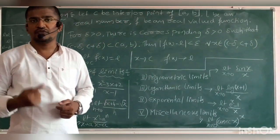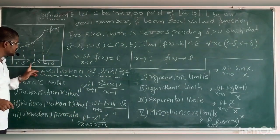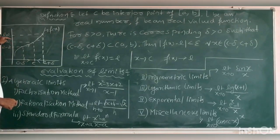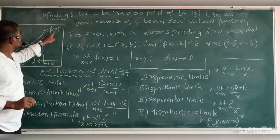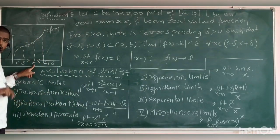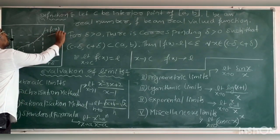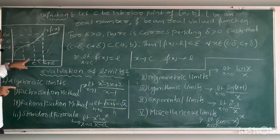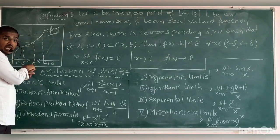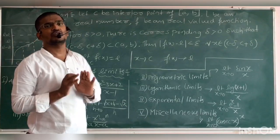I have already explained the definition. As X approaches to C from both the sides — that much is your limit of function. That means as X approaches to C in the domain, F of X is going to approach to N approximately. Whenever X is approximately equal to C, your F of X is going to be approximately equal to N — that is your limit of function.